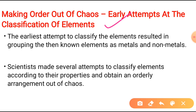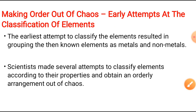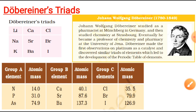You all know that metals show some kinds of properties which we have discussed in the previous chapters. Later, many classifications were tried. Some important classifications will be discussed in this chapter. We are starting from the first classification, that was Dobereiner's Triads, done in the year 1817.